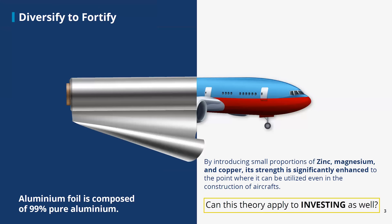Let us understand this better through the magic of chemistry as well. Aluminium foil is 99% aluminium. Add a few other components in small quantities by reducing the aluminium to 91%, and we get what is known as Aluminium 7075. Adding other elements to aluminium can improve its overall hardness and strength, which can then be used to make aircraft bodies.